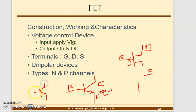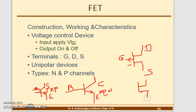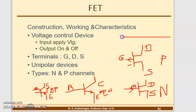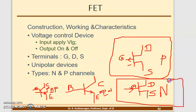For a transistor: Base, Collector, and Emitter terminals — if the emitter arrow is in the inward direction, N is at the center with P on both sides, making it a PNP transistor. Similarly for FET, with Drain, Source, and Gate terminals: if the arrow is in the inward direction, it is an N-channel FET. If outward, it is a P-channel FET.